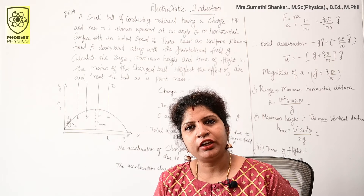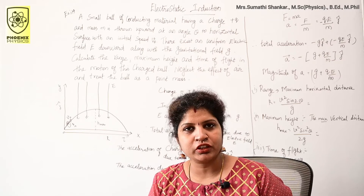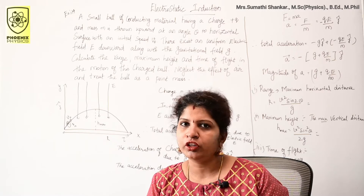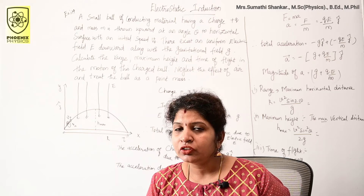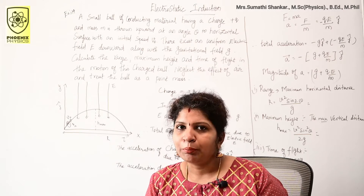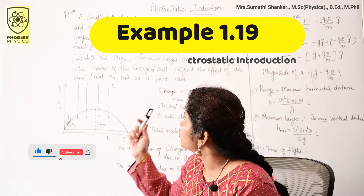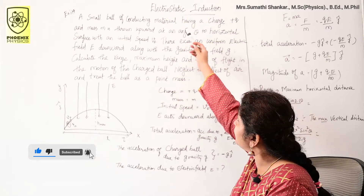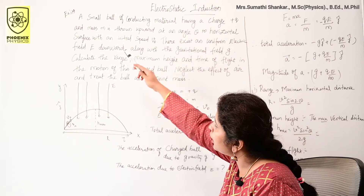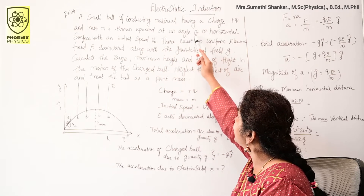Hello friends and dear students, welcome back to my channel Phoenix Physics. Today we are going to discuss Example 1.19. In our previous video we discussed electrostatic induction, and based on that concept this problem is given. A small ball of conducting material has a charge +q and mass m, and is thrown upward at an angle theta to the horizontal surface.